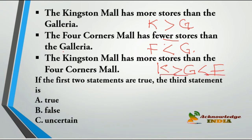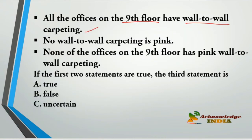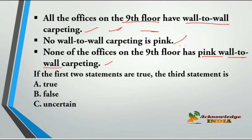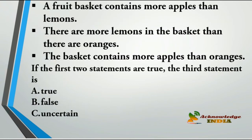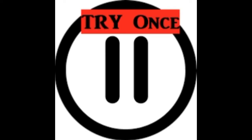Problem 3: All offices on the ninth floor have wall-to-wall carpeting. No wall-to-wall carpeting is pink. Therefore, none of the offices on the ninth floor has pink wall-to-wall carpeting. The ninth floor offices have carpets, but none of those carpets can be pink. So the third statement is true.